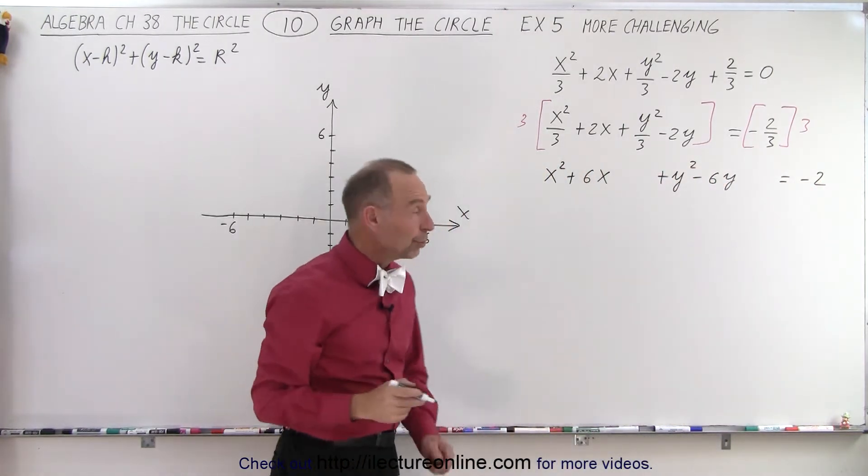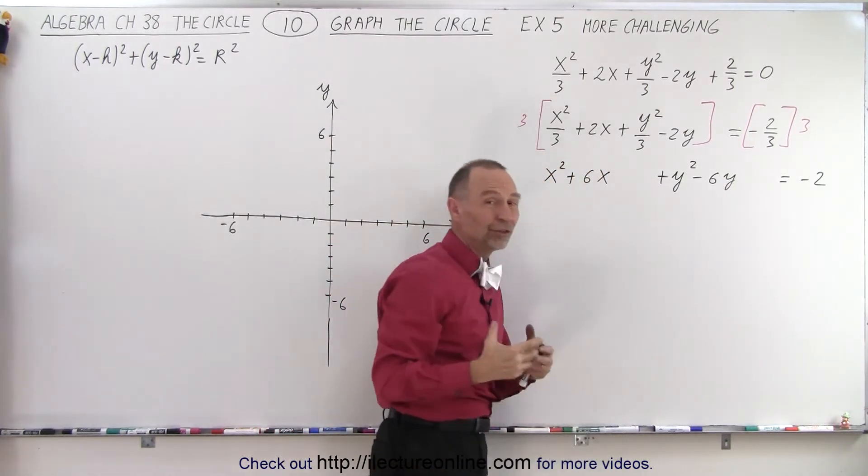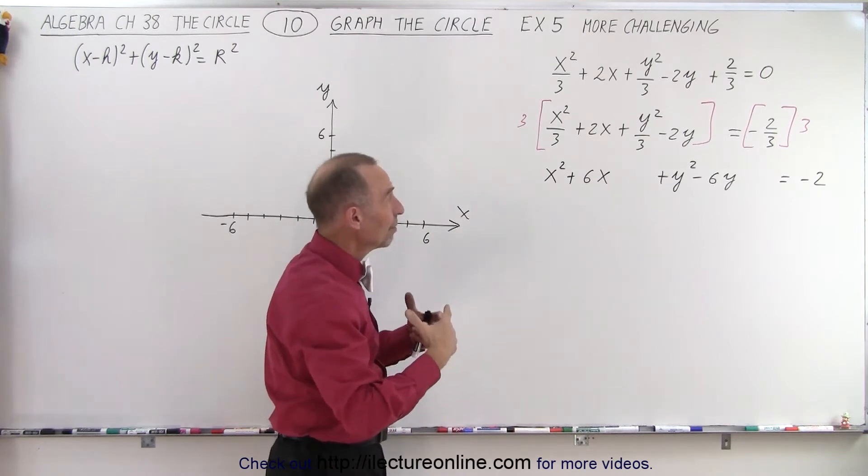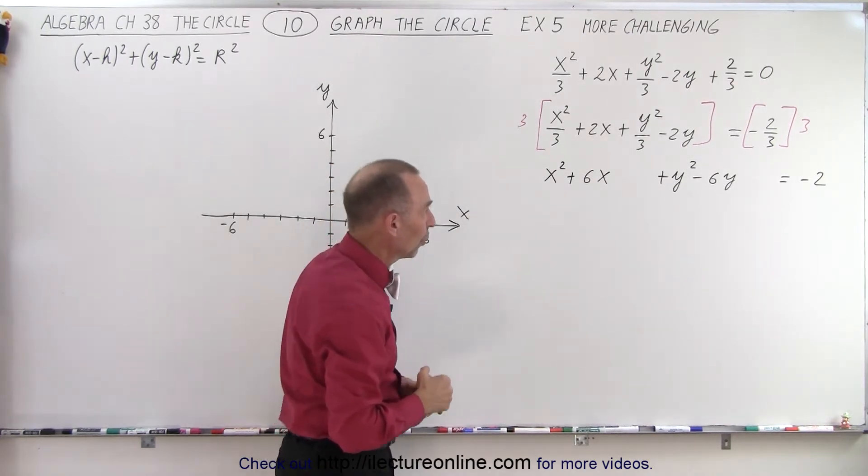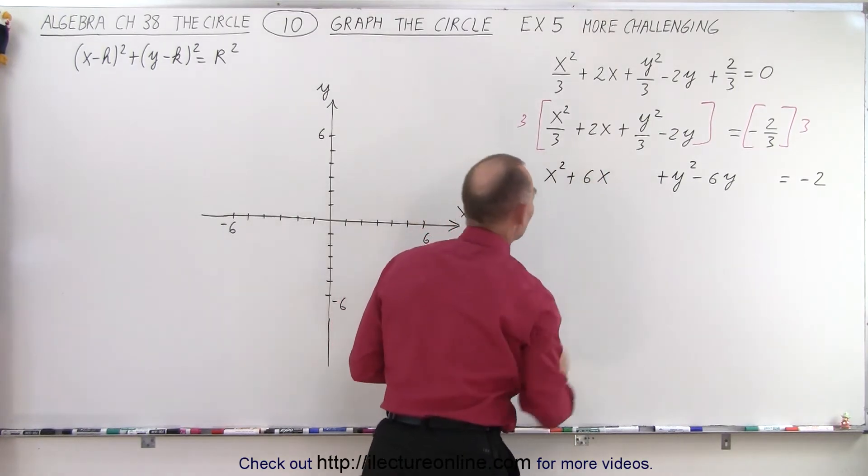Okay, why did I leave room there? Well, since I both have an x to the first term and a y to the first term, I'm going to need to find the perfect square. So in the case of this, I'm going to take this and divide by 2, square it, and add it to both sides.